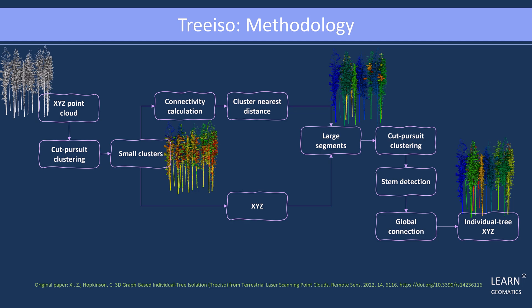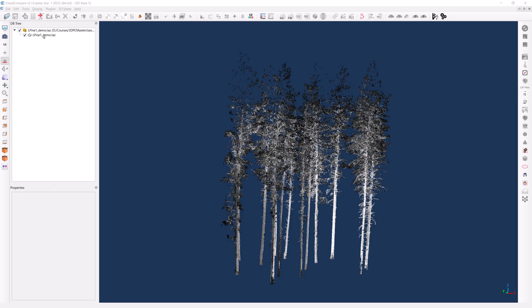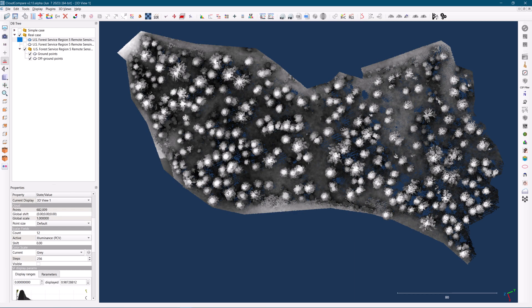Now, let's do a demonstration of TreeISO in action using CloudCompare. In the resources section of your course, you can find the data that I will be using for this demo. I will showcase two case studies, one involving terrestrial laser data, which is relatively straightforward, and another involving aerial lidar data, which presents a more complex scenario.